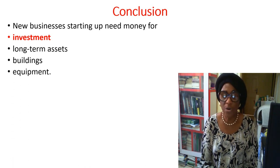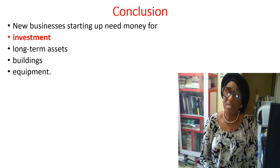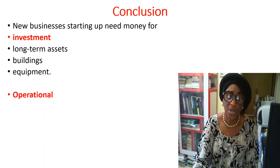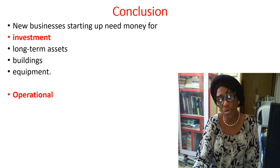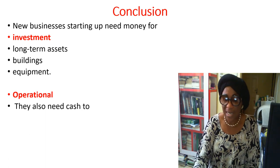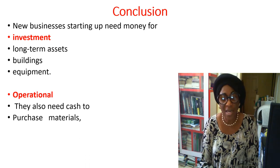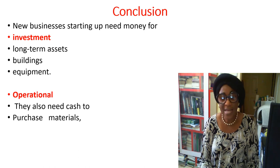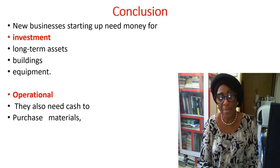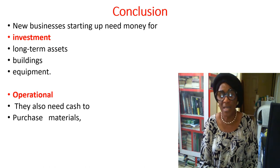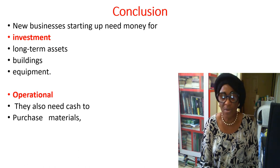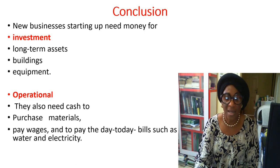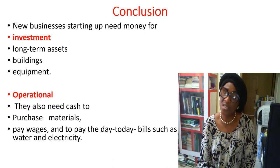Businesses need money to buy equipment and for office infrastructure. They also need operational money — cash flow to purchase raw materials needed to prepare their products or services. This is a regular, recurring need. They also need money to pay salaries and wages of employees.